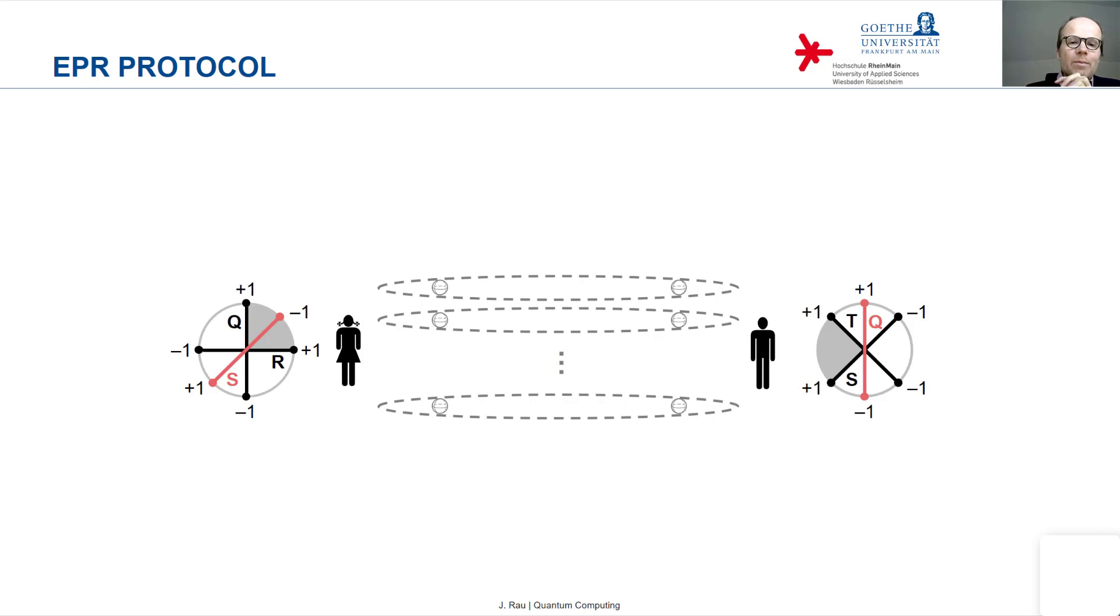And likewise Bob. And then they group the Bell pairs in two groups. In one group, they have all the Bell pairs on which they performed identical measurements. And in the other group, they have all the Bell pairs on which they performed different measurements.